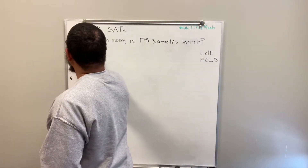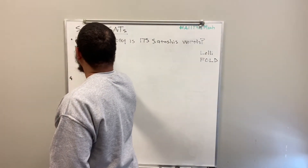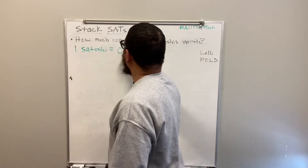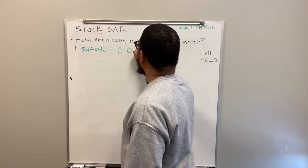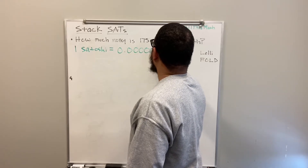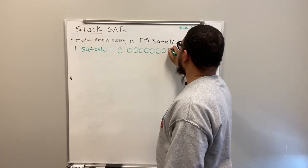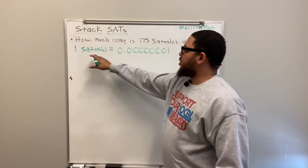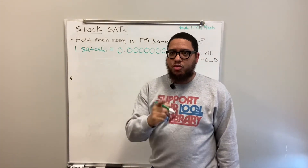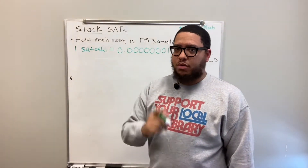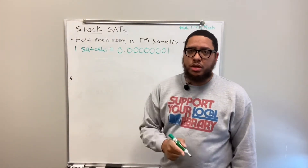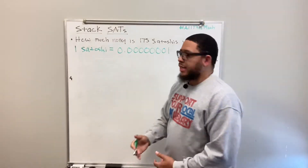One satoshi is equal to one hundred-millionth of one Bitcoin. I'll repeat that: one satoshi is equal to one hundred-millionth of one Bitcoin.